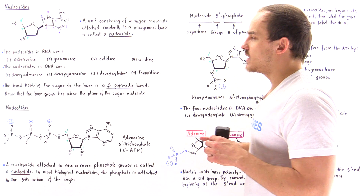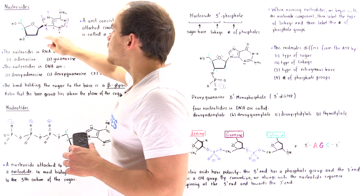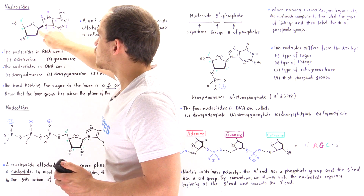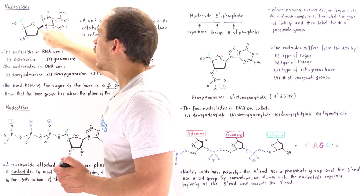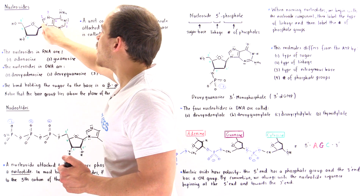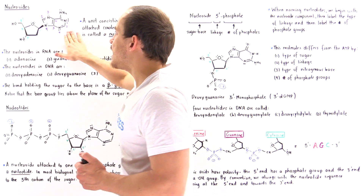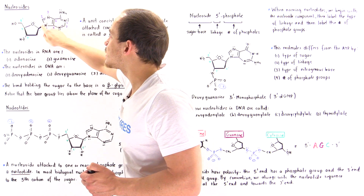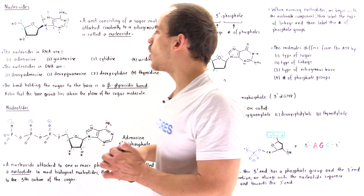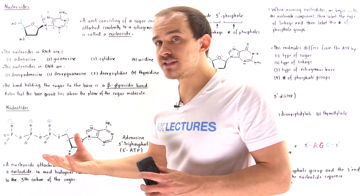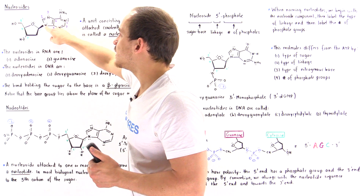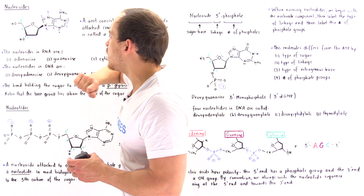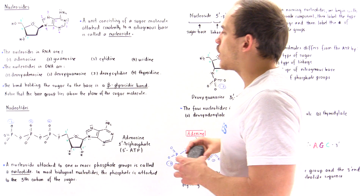Let's mention one more thing about nucleosides. Notice that the bond in the nucleoside that connects these two different molecules is always between carbon number one-prime on the sugar and a nitrogen found on the base. If the base is a purine — meaning we have two fused rings — then nitrogen number nine will always be bound to carbon number one. If the base is a pyrimidine, when we have only a single ring, then the nitrogen would be nitrogen number one. So the bond always takes place between carbon number one and a nitrogen atom found on our base.